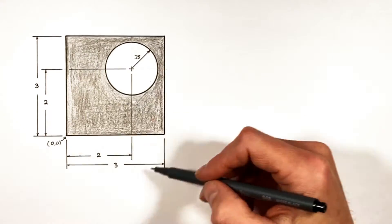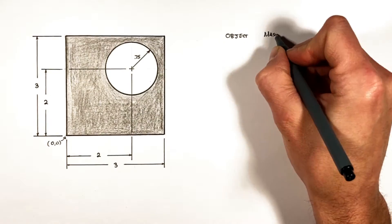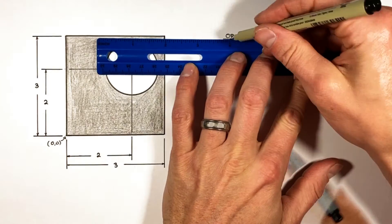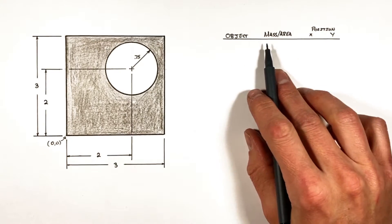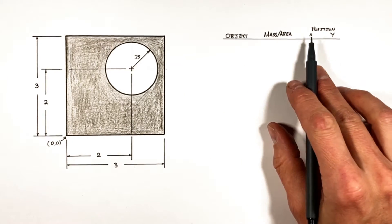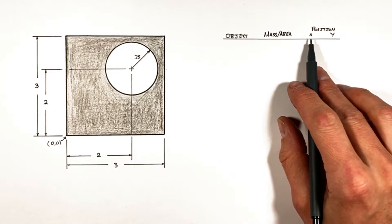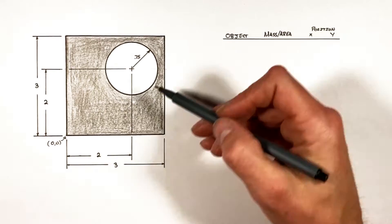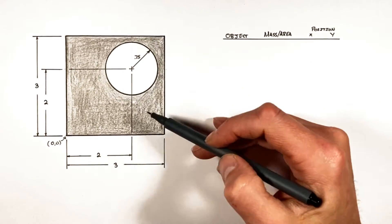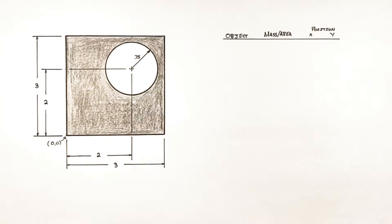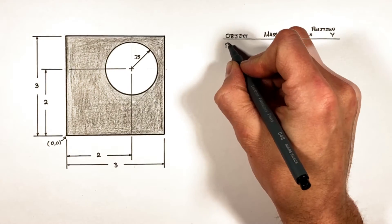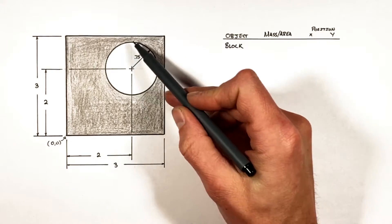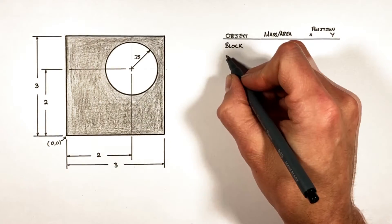To work out the center of mass, the first thing we're going to do is set up a table to keep all the information in this picture organized. We're going to look at the object and the mass or area of each object, as well as each object's horizontal and vertical position. It looks like we only have one object, this block, but in reality there's actually two things here: the first is the block, the second object is the hole which we've cut out of the block.